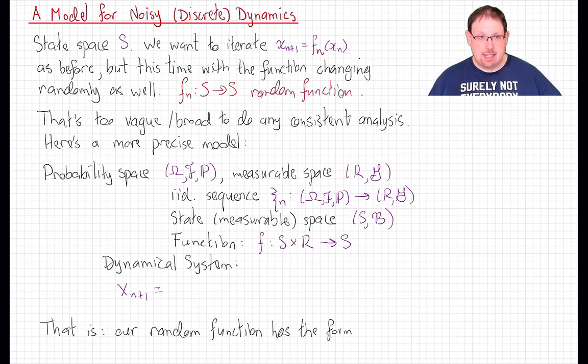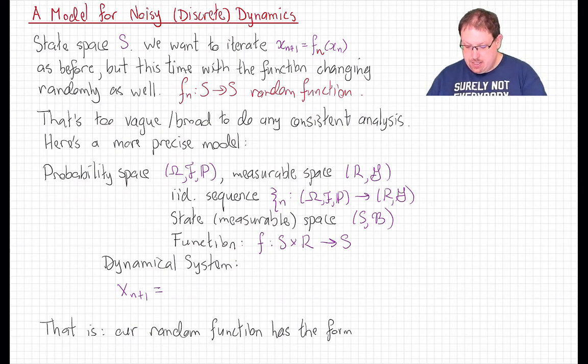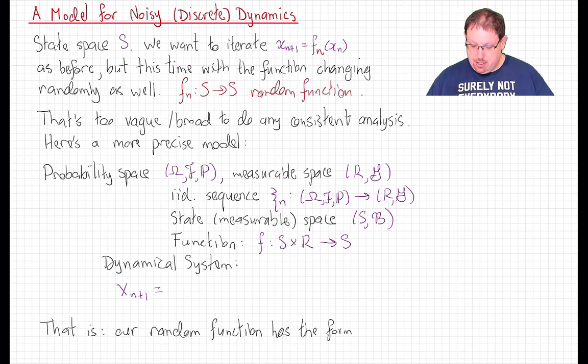Now, we might not know much about the distribution of those, but we're going to assume that they're independent and identically distributed, which is basically just to say that whatever happens in the dynamics step by step doesn't affect in any way what the noise looks like. Now, we'll still have our state space S, where all of the dynamical action is going on, but we're going to make it a measurable space now.